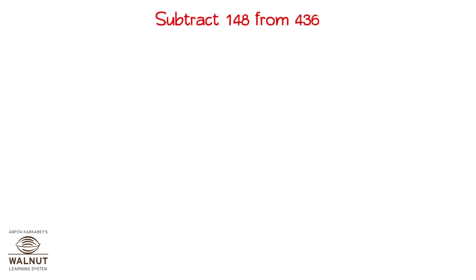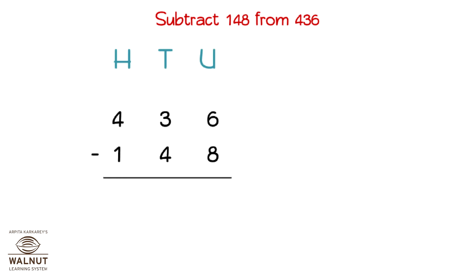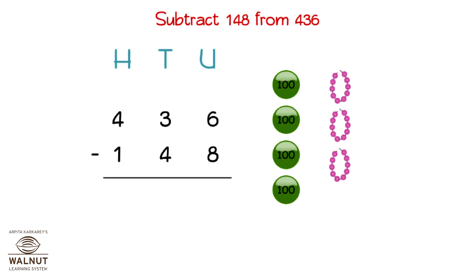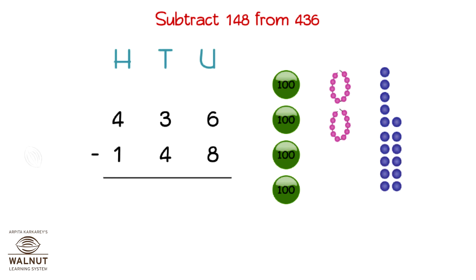Subtract 148 from 436. We write the numbers one below the other to subtract. We write the place values. Now we look at the numbers in the units place. We cannot do 6 minus 8, so we need to borrow. Let's first draw symbols for 436. We draw 4 hundreds, 3 tens and 6 units.